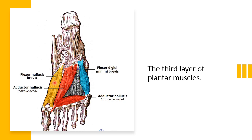Adductor hallucis is lateral to flexor hallucis brevis and has two heads: an oblique head and a transverse head. The oblique head originates from the base of the second, third, and fourth metatarsals. The transverse head originates from the plantar ligament of the metatarsophalangeal joint.